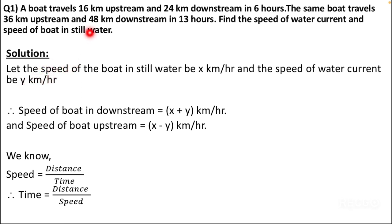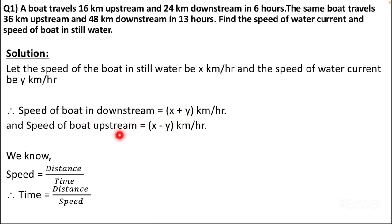It is very important to understand what is upstream and what is downstream. Stream is nothing but a river. Whenever the river is flowing in the upward direction it is called upstream, and whenever it is flowing in the downward direction it is called downstream. So we will take the speed of the boat downstream as x plus y, and the speed of the boat upstream as x minus y.